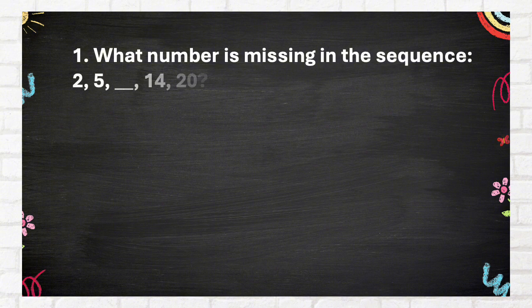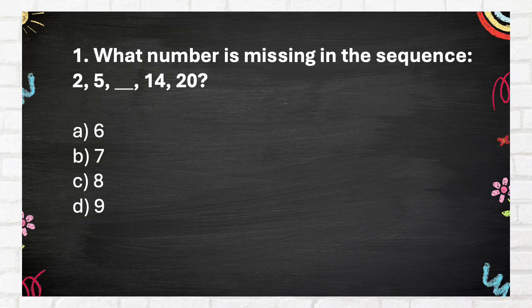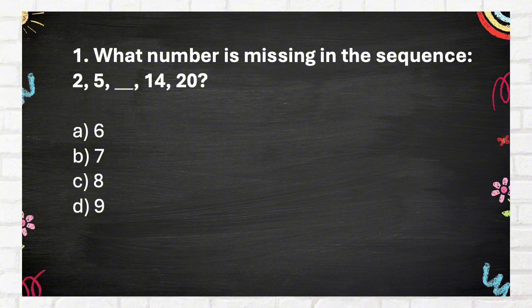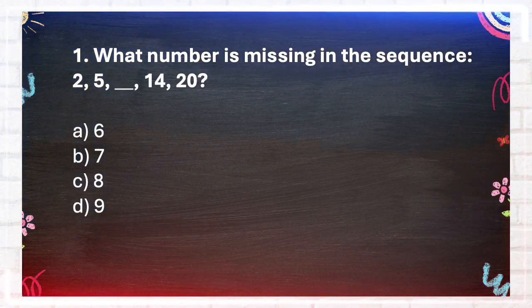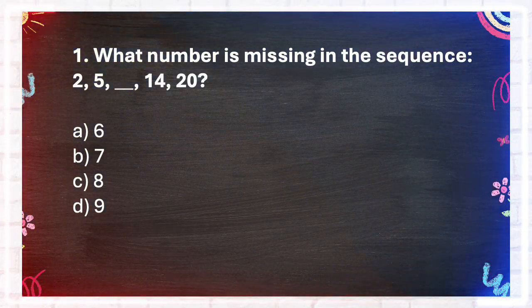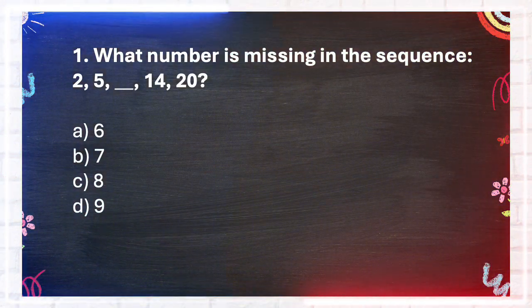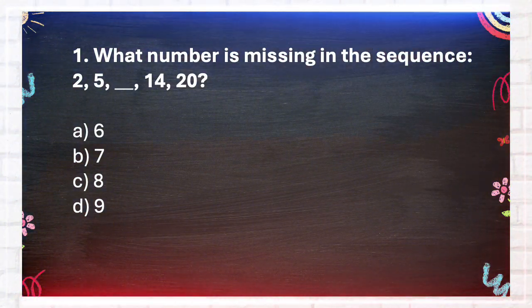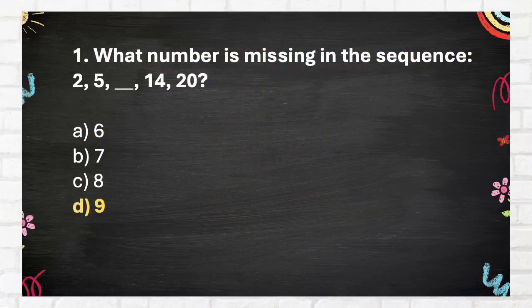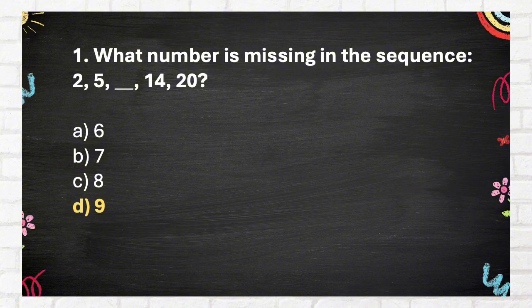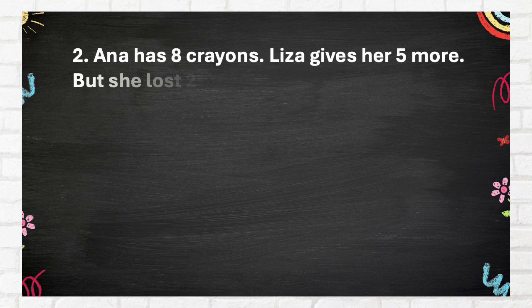Question number 1. What number is missing in the sequence? A 6, B 7, C 8, D 9. The answer is D, 9.